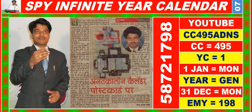In this video you are watching SPY Infinite year calendar for the year having calendar code equal to 4, 9, 5. You may also search it on YouTube by CC 4, 9, 5, ADNS.